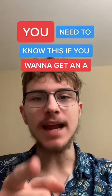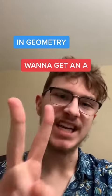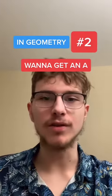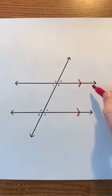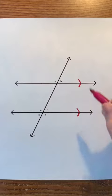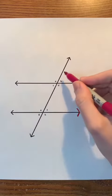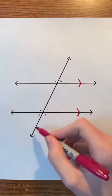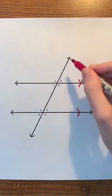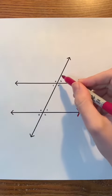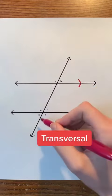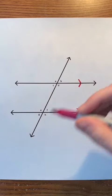You need to know this if you want to get an A in geometry. Let's say that we have two lines and a line going through those two lines. The line going through those two lines is called a transversal.